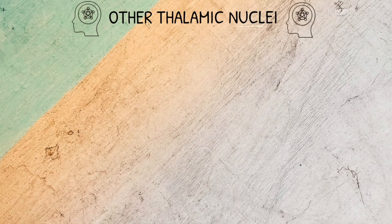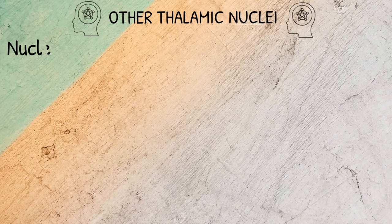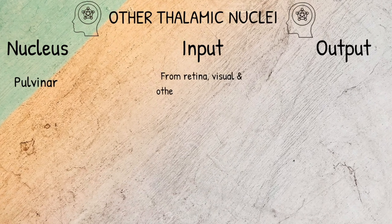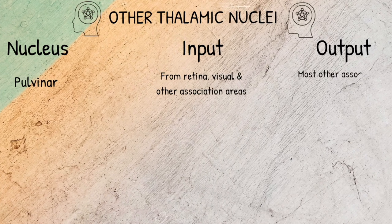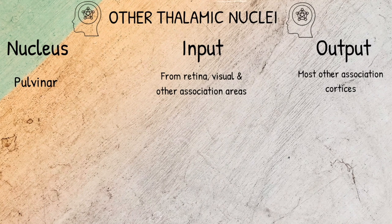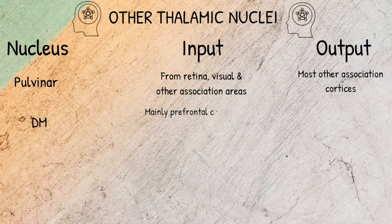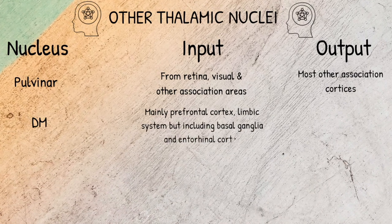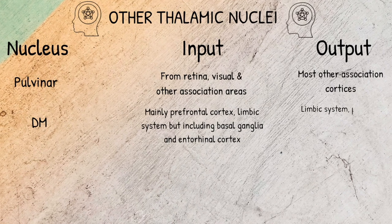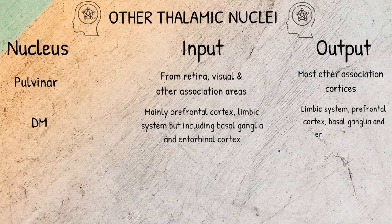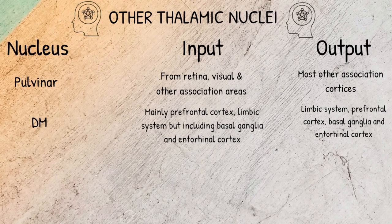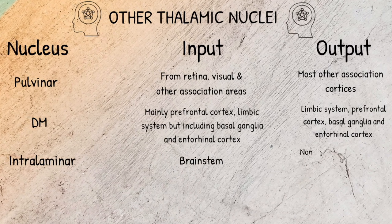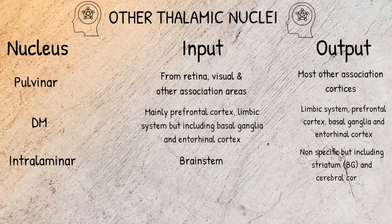Finally, we are going to address the inputs and outputs of the remaining thalamic nuclei. The pulvinar nuclei receives visual input from the retina and other association areas, and sends stimuli to most association cortices. The dorsal medial nucleus receives a variety of inputs, including from the limbic system, basal ganglia and entorhinal cortex, but its input is mainly from the prefrontal cortex. It relays its outputs to the limbic system, the prefrontal cortex, the basal ganglia and the entorhinal cortex. The intralaminar nucleus receives input from the brainstem, but it generally has non-specific output; however, the output it does have includes the striatum and the cerebral cortex.